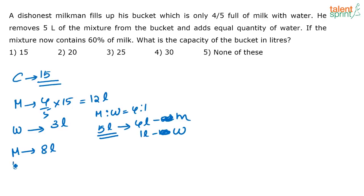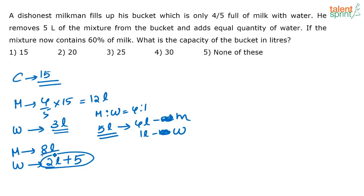After removing five liters, eight liters of milk remains. There was three liters of water, minus one liter removed, leaving two liters of water, and then five liters of water is added back. The total bucket capacity is 15 liters. Eight out of 15 — is that 60%? No, it is not. So 15 liters is not the correct option.